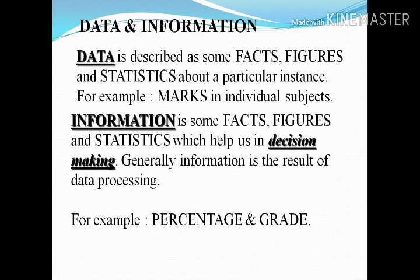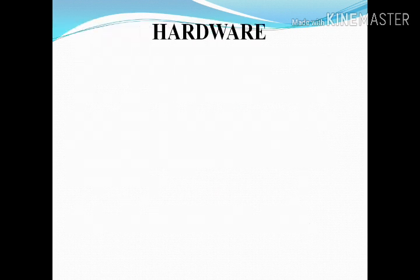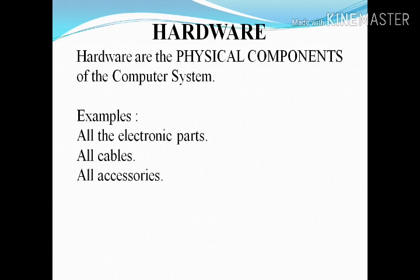The output gives us the result. Now, data and information: data is the facts, figures, and statistics about a particular instance — for example, marks — that may or may not be meaningful. Information is processed data and is obviously meaningful.